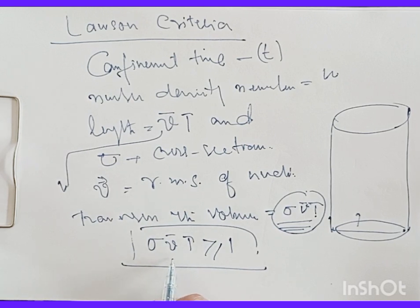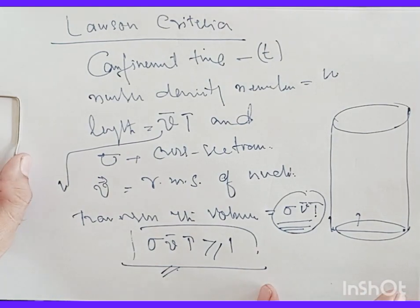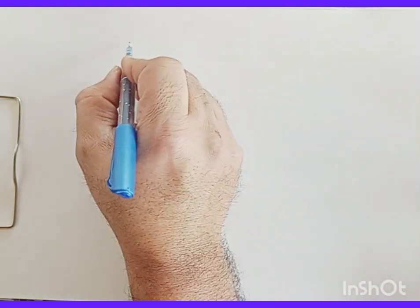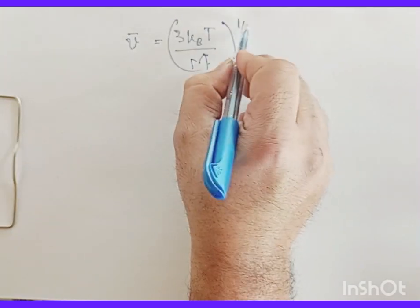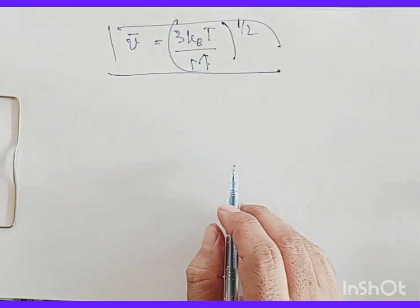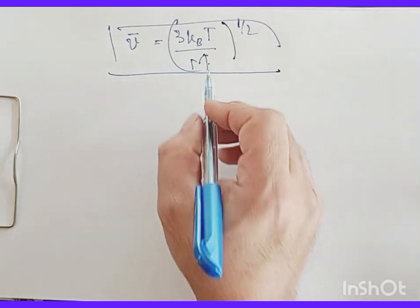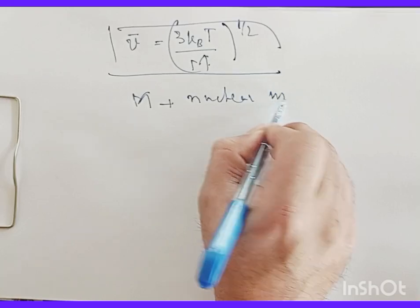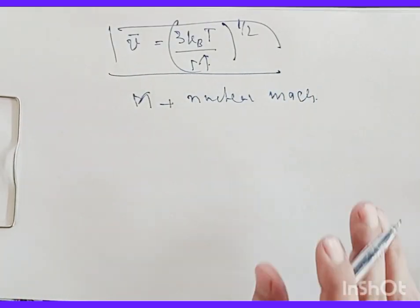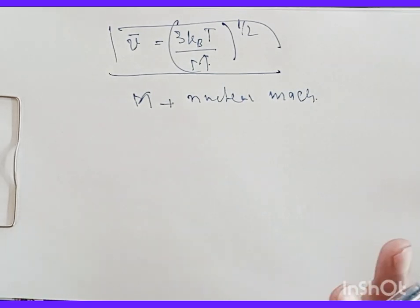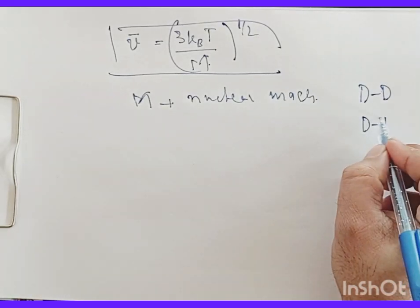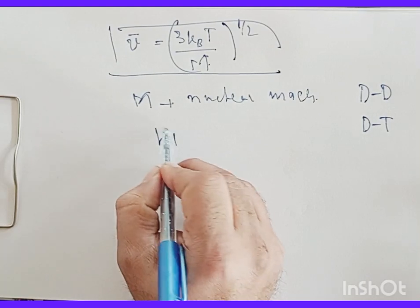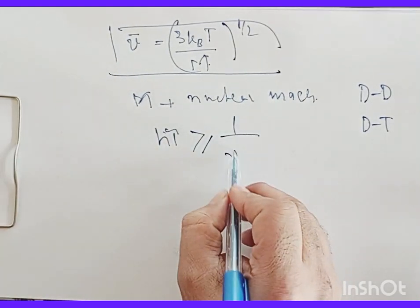The root-mean-square velocity from Maxwell-Boltzmann distribution law is v̄ = (3k_B T/m)^(1/2), where m is the nuclear mass. For deuteron-deuteron or deuteron-tritium reactions, the condition becomes: nτ ≥ 1/(v̄σ).